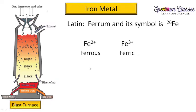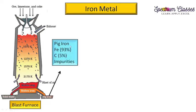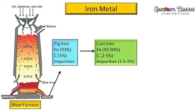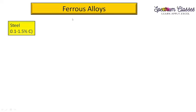Iron is obtained from the blast furnace. The molten metal obtained from the blast furnace is known as pig iron — in Hindi, kaccha loha. Pig iron is used to make cast iron (dhalwa loha), and also wrought iron (pituma loha in Hindi). Wrought iron is the purest form of iron.